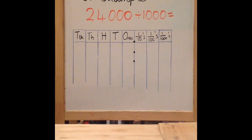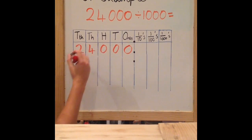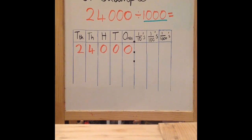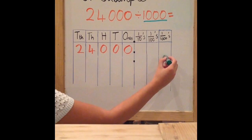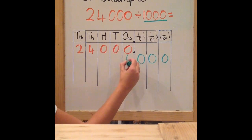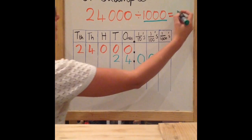If you were to have the calculation 24,000 divided by 1000, first put the digits in the correct place value columns: three zeros, then 4 and 2. Next, look at the sign — I'm dividing, so my number is getting smaller. 1000 has three zeros, which means my digits are going to move three places to the right. So my answer is 24.000, and 24.000 is the same as 24. So 24,000 divided by 1000 equals 24.